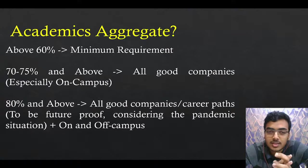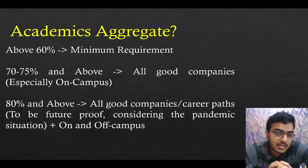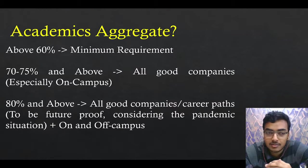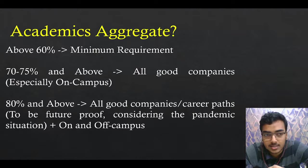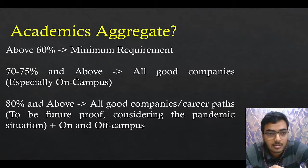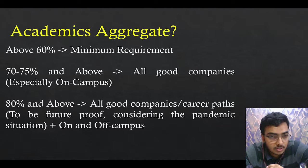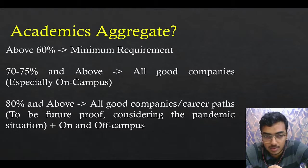You might have the doubt about what academic aggregate is required. Here is a list of things to keep in mind while setting a target. If you set your target above 60%, you will meet the minimum requirement for a company. Many companies that come specially to campus have a minimum requirement of 60%. If you have a 70 to 75% target, then all good companies coming to campus — you will be eligible for them.